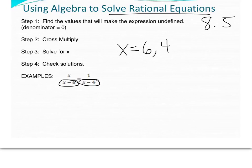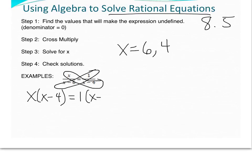The next step is cross-multiplying. So I'm going to cross-multiply the x times the x minus 4 and the 1 times the x minus 6. What I end up with is x times x minus 4 equals 1 times x minus 6. Let's go ahead and distribute. So you get x squared minus 4x equals x minus 6.